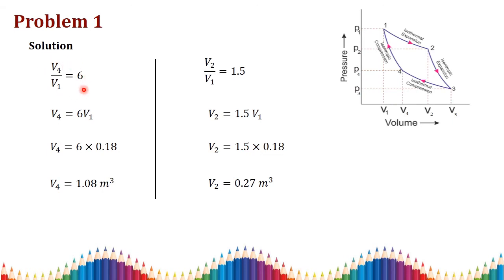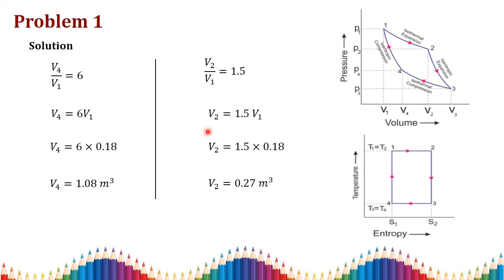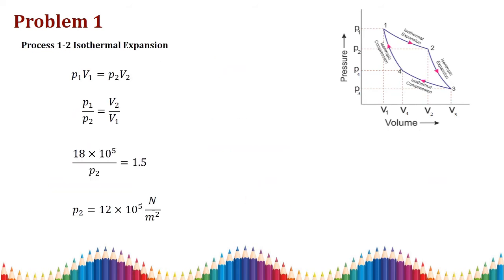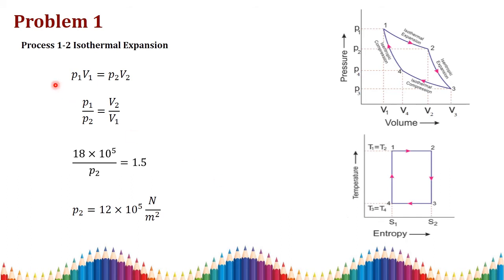From the given volume ratios: v4 = 6 × v1 = 6 × 0.18 = 1.08 cubic meters. Also, v2 = 1.5 × v1 = 1.5 × 0.18 = 0.27 cubic meters.